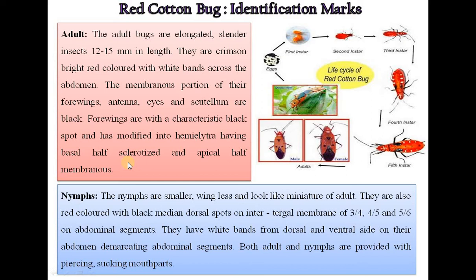The nymphs are smaller, wingless and look like miniature adults. They are also red colored with black median dorsal spots on the intertergal membrane of the 3rd-4th, 4th-5th, and 5th-6th abdominal segments. They have white bands on their abdomen demarcating abdominal segments. Both adult and nymph are provided with piercing-sucking mouthparts.